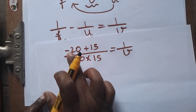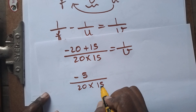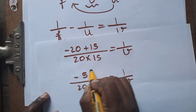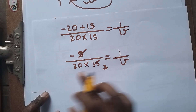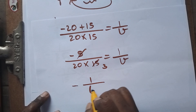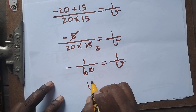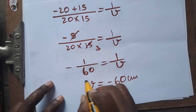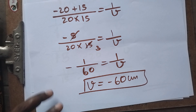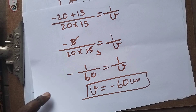Calculating: (-20 + 15) / (20 × 15) = -5 / 300 = -1/60. So 1/v = -1/60. Flipping the equation: v = -60 cm. I already told you the expected value was more than 30 and negative — we got -60 cm, which confirms we have the correct answer.